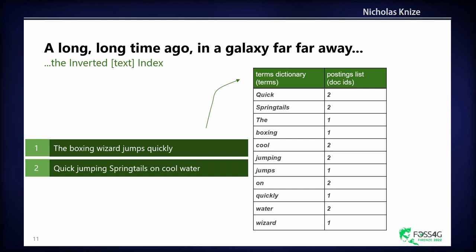If we look at two documents, very simple, small documents. First one: every letter of the alphabet and the boxing wizard jumps quickly. The second one has similar words with different stems and postfixes: quick jumping springtails on cool water. If we put this inside an inverted index like Lucene, it's lexicographically sorted inside the terms dictionary, and the document ID that those fall into is placed inside the postings list.